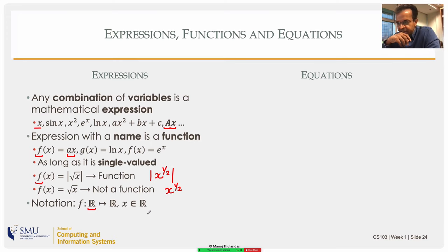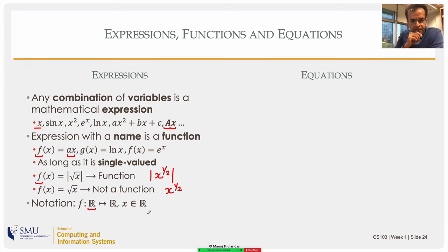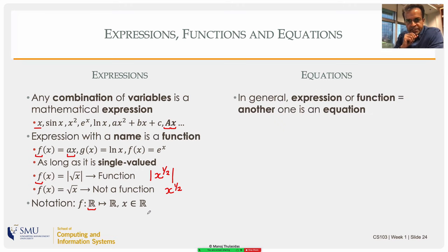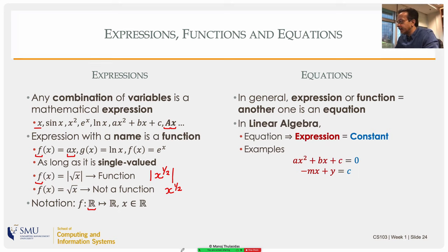Taking an expression and calling it by a name is an assignment-like operation — I'm not saying anything about the truthfulness of the statement, I'm just using the name f to stand for an expression. An equation is a different kind of beast. When I say an expression equals another expression or a constant, I'm making a statement of truth — I'm requiring that to be true. For instance, ax² + bx + c = 0: the left-hand side is an expression, the right-hand side is a constant; that is our preferred form.